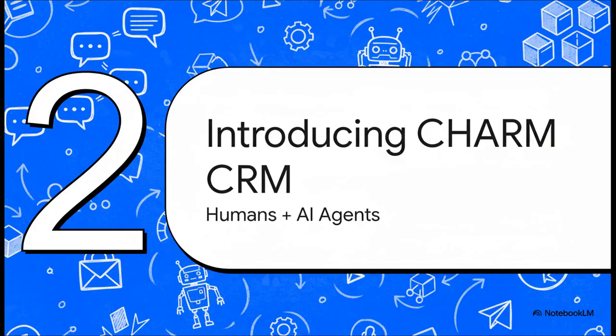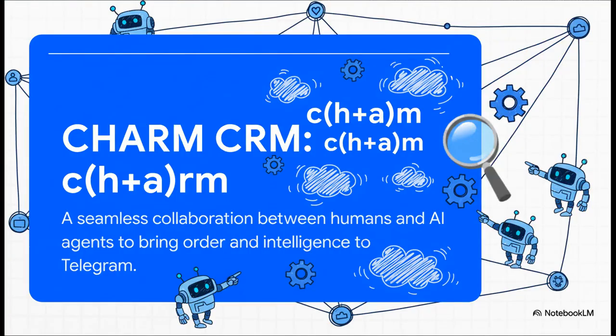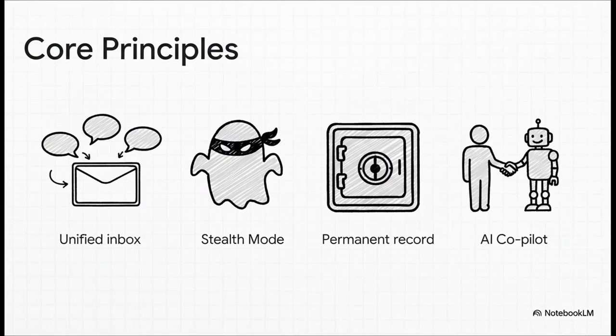So this is where CharmCRM comes into the picture. It's a solution that was designed from the ground up specifically for how Web3 communication actually works, blending what humans are good at with these really powerful AI agents. The name itself is kind of clever — Charm actually stands for charm, which represents this partnership between humans and AI. The whole idea is to create a workflow that isn't just effective, but is actually simple and elegant to use. It's all built on a few really solid principles.